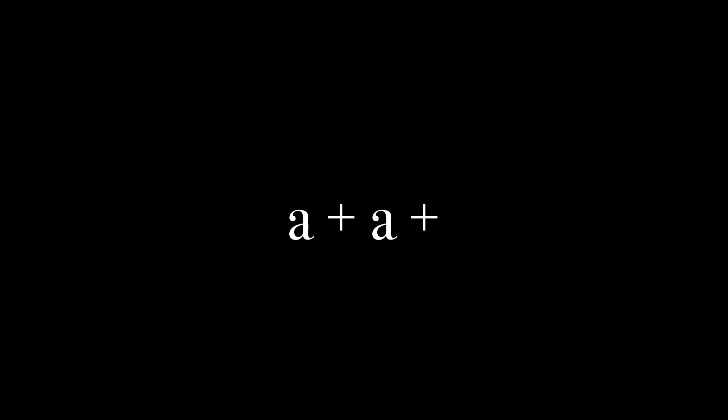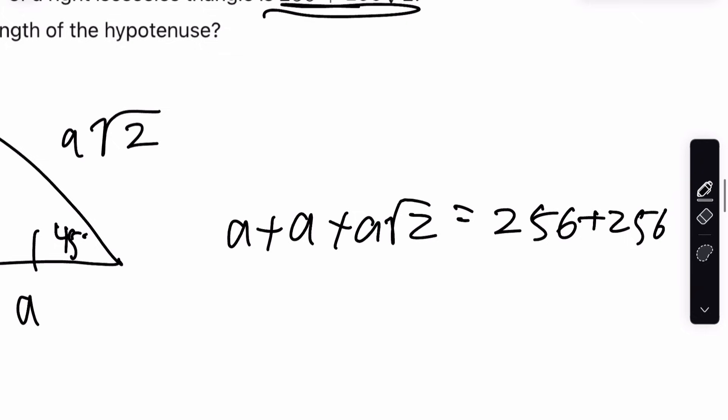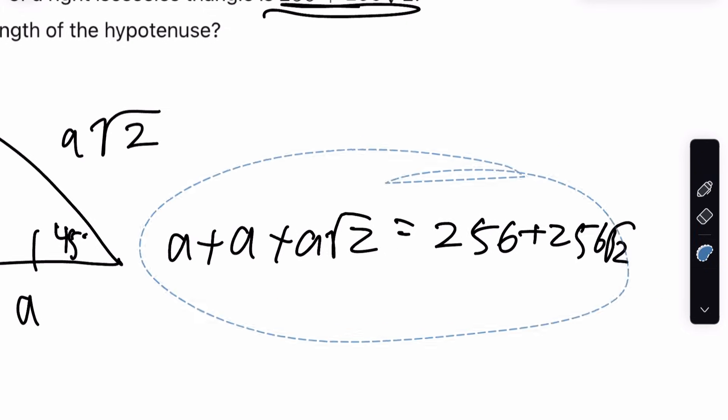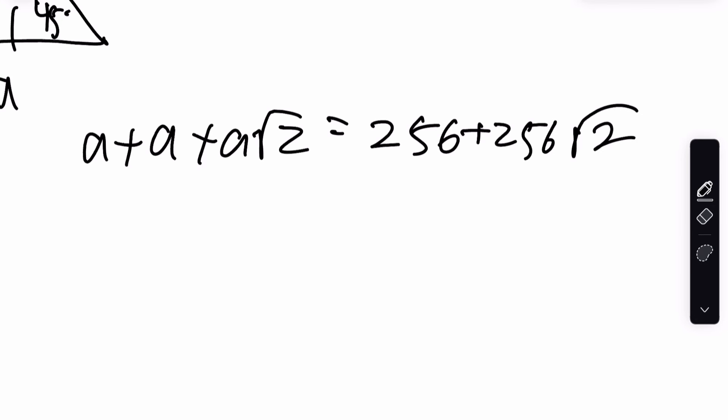Okay, where do you even go from here? If you know your special right triangles, it's going to be really easy because you just take the perimeter, which is what you need, a plus a plus a root 2, and you set it equal to the perimeter you were given. 256 plus 256 root 2. From here, just put it in Desmos. I'll show you.